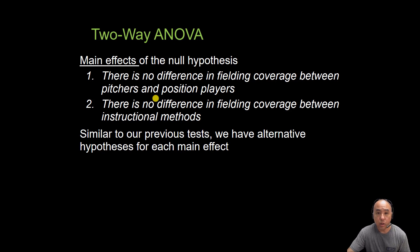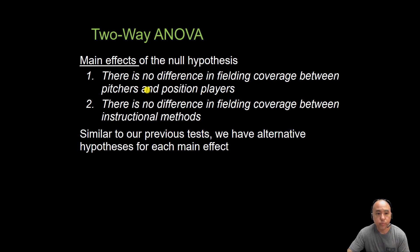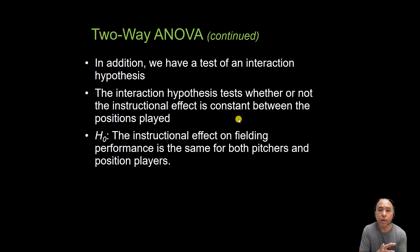The null hypotheses for the main effects are: there's no difference in fielding coverage between pitchers and position players, and there's no difference in fielding coverage between instructional methods — drills versus scrimmages. Those are the main effects of position and instructional method. We also need a third null hypothesis for the interaction — our primary question — which is that there is no interaction between instructional method and position, meaning the effect of instructional method on fielding performance is the same for both pitchers and position players.